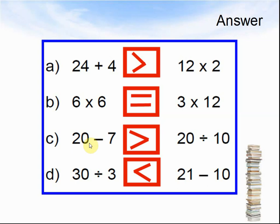See, 20 minus 7 is 13, which is bigger than 20 shared by 10, which is 2. 30 divided by 3 is 10, which is smaller than 21 take away 10, which is 11.